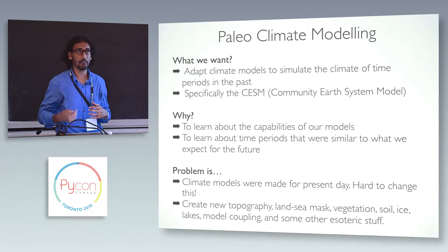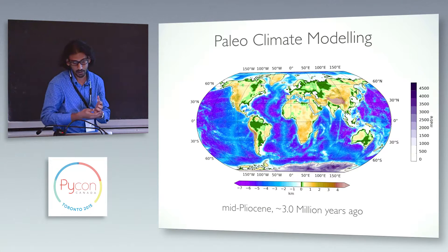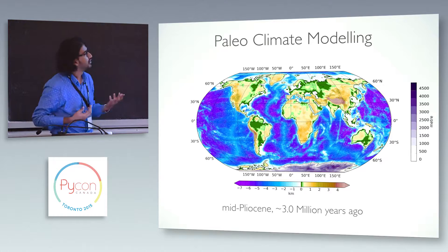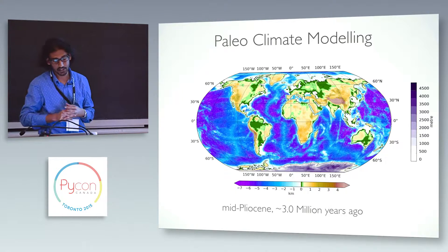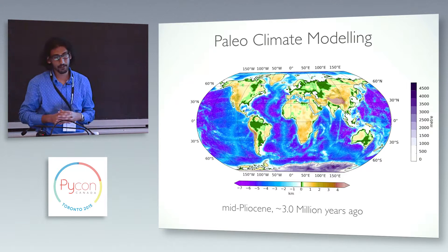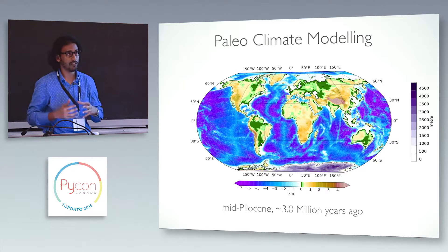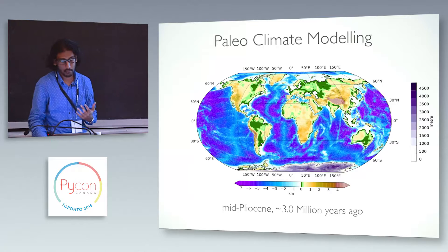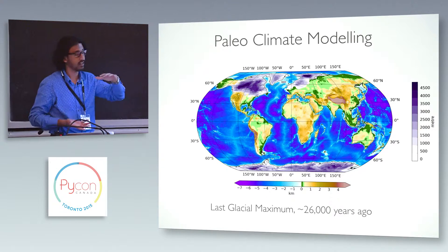For example, this is the time period about 3 million years ago, which is something I work on. The purple bar shows where there is ice. There is no ice in Greenland over that time period, and there is no ice over West Antarctica, which is at the southern tip of South America. There is also a notable difference over northern Canada. So these differences all have to be manually changed grid by grid and then re-implemented into the model.